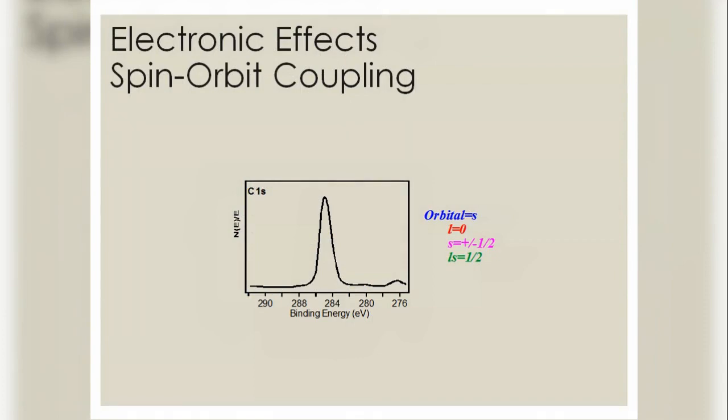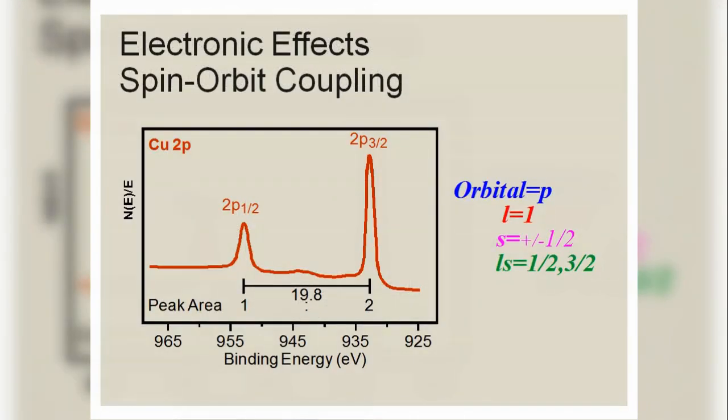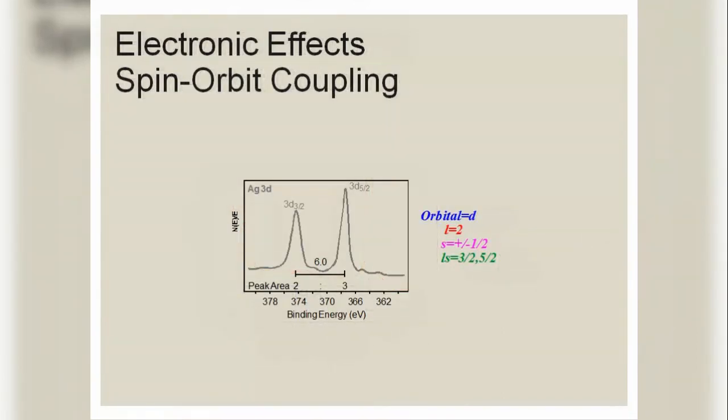Electronic effects include spin-orbit coupling. For example, in the P orbital: L = 1, S = ±1/2, J = 1/2, 3/2.